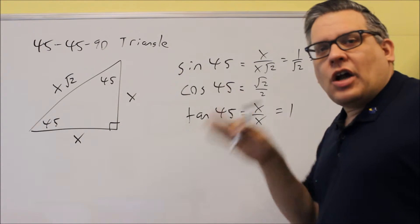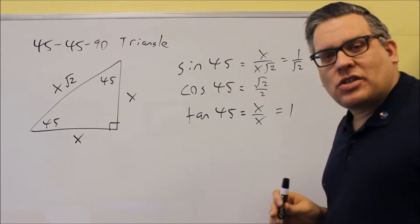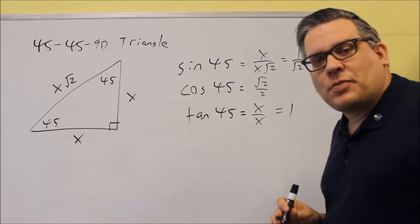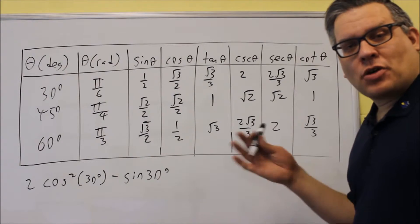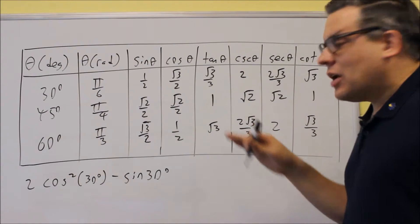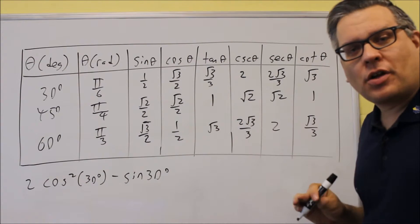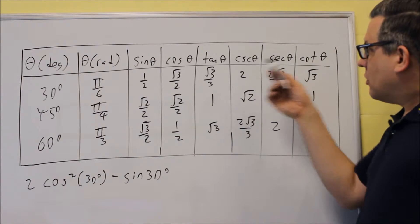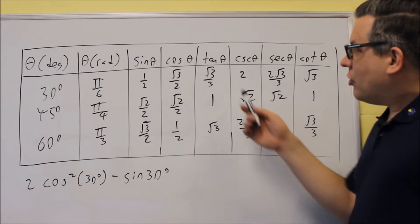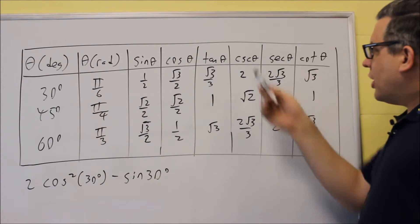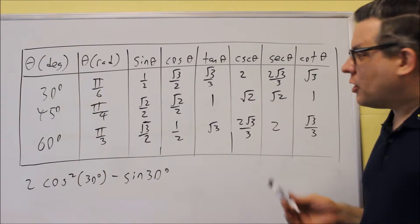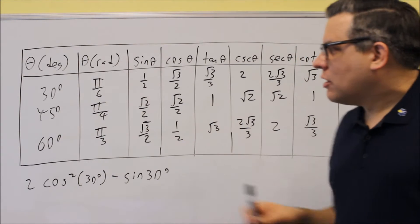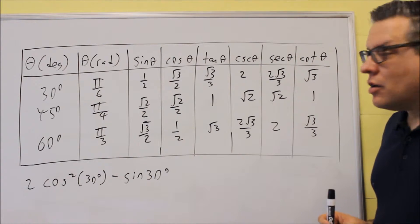I'm going to give you another table with sine, cosine, and tangent values, but also cosecant, secant, and cotangent, so you have all of those in one spot. If you take those special triangles we just talked about, you get these same values. This table you've seen before from the unit circle, but now I'm adding cosecant, secant, and cotangent. Since they're reciprocals of sine, cosine, and tangent, we can get all of them. We're looking at 30, 45, and 60 degrees.